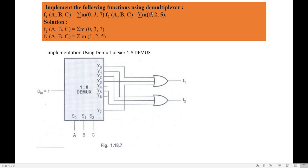First, we decide what type of demultiplexor to choose. Since there are three input variables a, b, c, there are 2 to the power of 3, which is 8, combinations — from 000 to 111. So I need to select a demux with 8 outputs, meaning I will use a 1-to-8 demultiplexor.